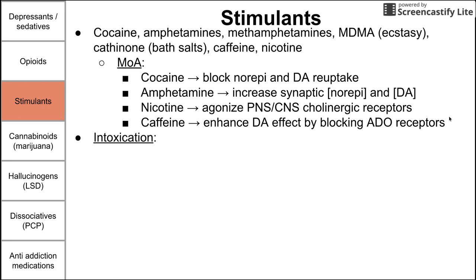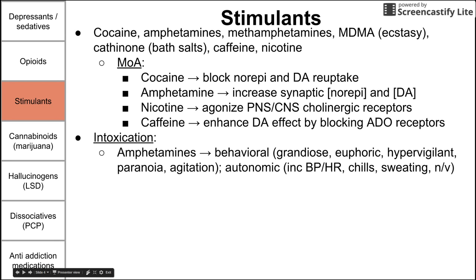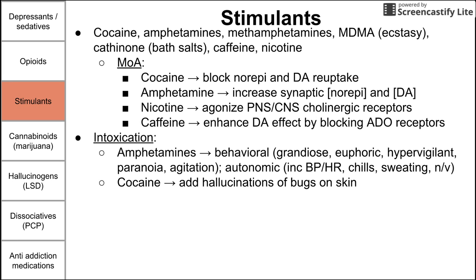Intoxication of stimulants varies depending on what you're taking, but for amphetamines you have grandiose behavior, euphoria, hypervigilance, paranoia, and agitation. You also have autonomic increases: elevated blood pressure, heart rate, chills, sweating, nausea, and vomiting. Cocaine essentially adds to that list — you also get a tactile hallucination of bugs on your skin, so you might see people itching or picking at their skin.